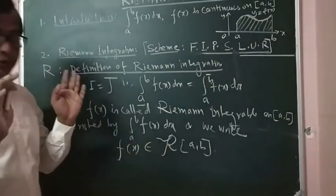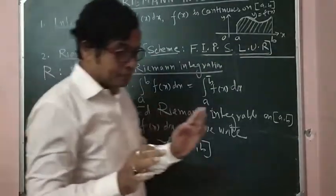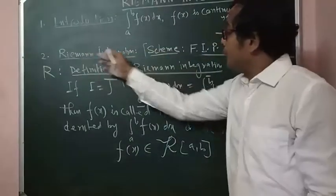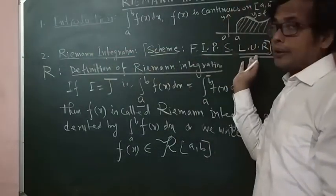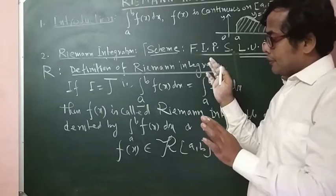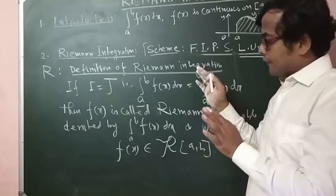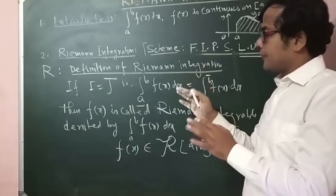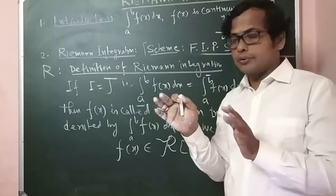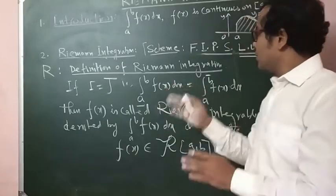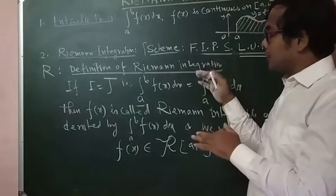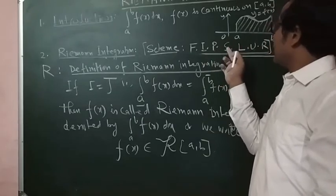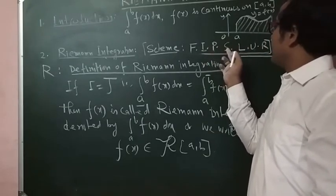So while we are defining the Riemann integration, we remember all these points: F, I, P, S, L, U, R. This is very necessary to remember when we try to define Riemann integration. If we test whether a function F(x) is Riemann integrable or not, we have to check by using the definition F, I, P, S, L, U, R.